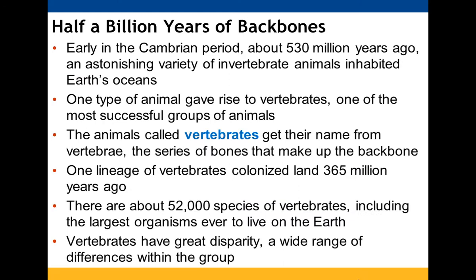This is the final chapter on diversity — it's all about vertebrates, their origin and their evolution. Half a billion years of backbones. We have lots and lots of invertebrate animals that were in Earth's oceans around 530 million years ago, and one of those is what allowed us to have vertebrates — probably the most successful group of animals. They get their name from the vertebrae, the bones that make up their backbone. A lineage of vertebrates colonized land 365 million years ago, and there are about 52,000 species of vertebrates with quite a diversity among them.